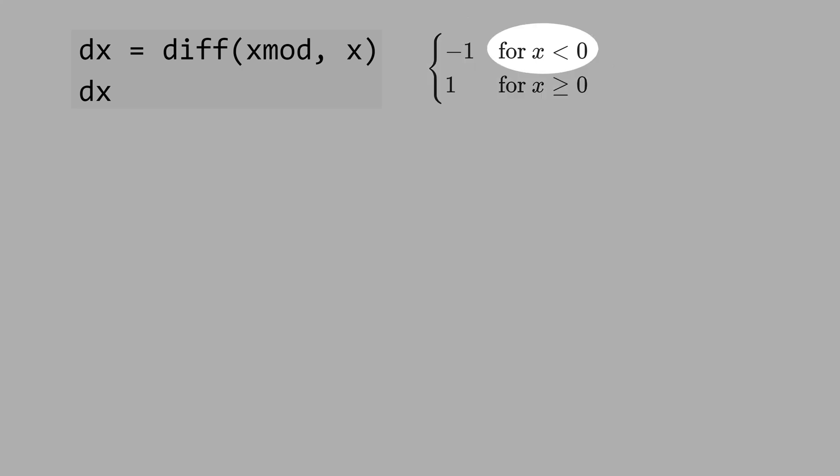Then the computer took the derivative for x below zero, and got minus one. And for x above zero, and got one. But, if you put together both pieces, we know that the derivative is not defined at point zero, because the left limit is different from the right limit.